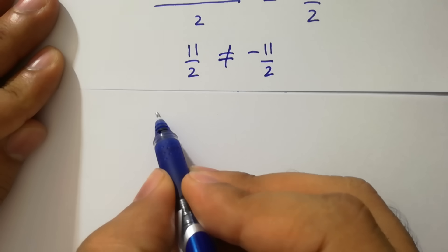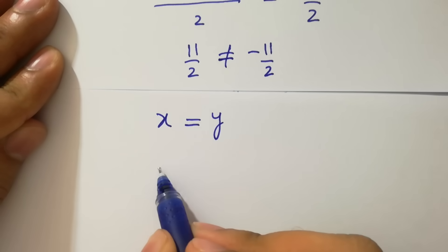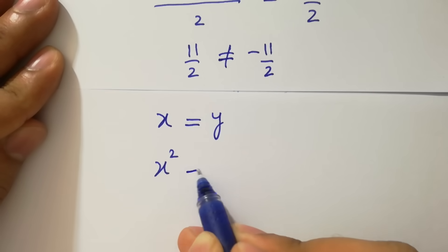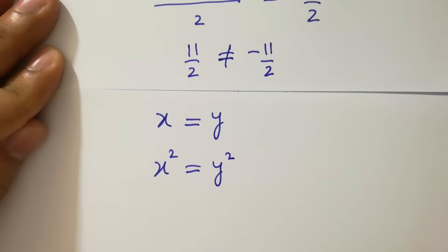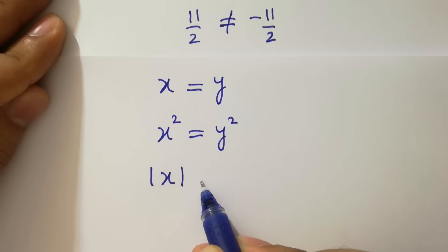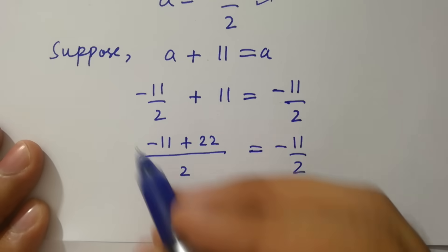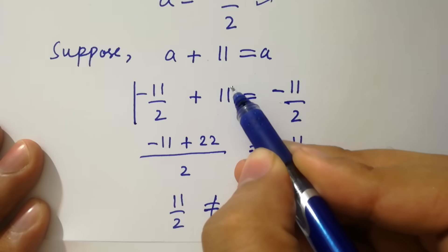As x equal to y, x square equal to y square and also absolute value of x equal to absolute value of y, then we should take modulus on both sides.